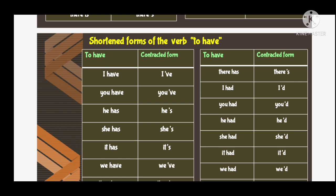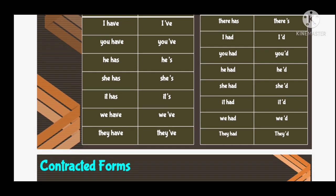Their has — short form is 'there's', their apostrophe s. 'I had' — short form is 'I'd', I apostrophe d. 'You had' — short form is 'you'd', you apostrophe d. 'He had' — short form is 'he'd', he apostrophe d. 'She had' — short form is 'she'd', she apostrophe d. 'It had' — short form is 'it'd', it apostrophe d. 'We had' — short form is 'we'd', we apostrophe d. 'They had' — short form is 'they'd', they apostrophe d.